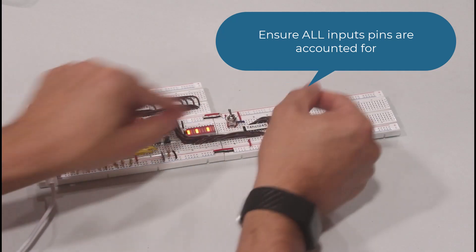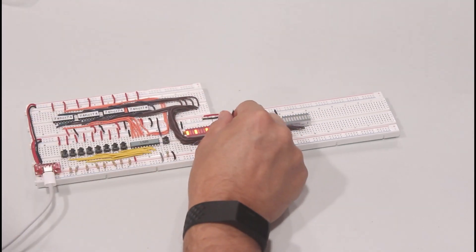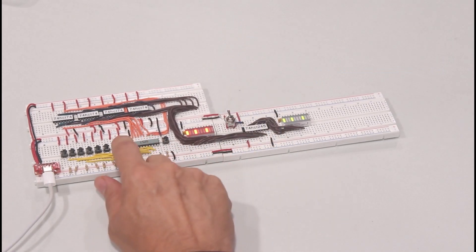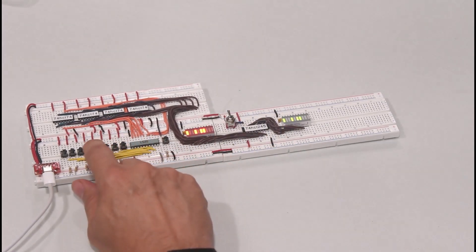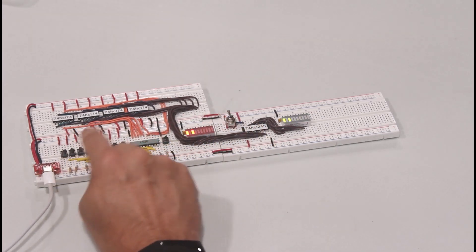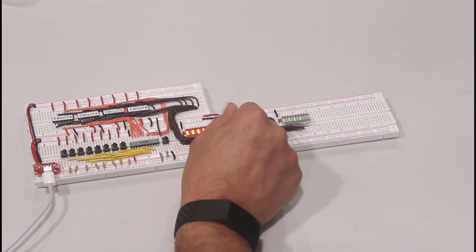And now it works as expected. I hope this video was informative and I was able to explain shared buses, bus contention, and how we mitigate the issue with a 74-245 bus transceiver. Thank you for watching.